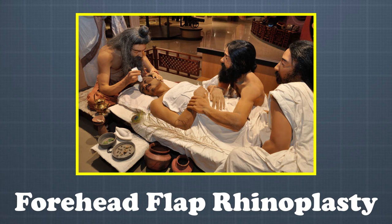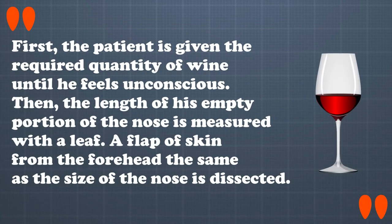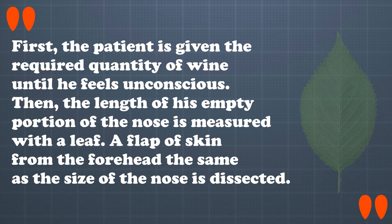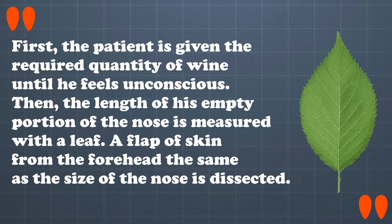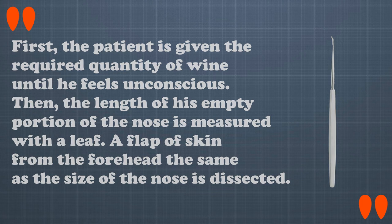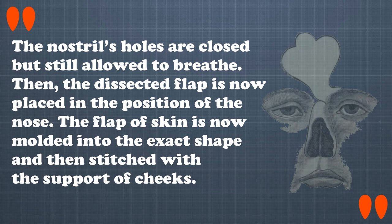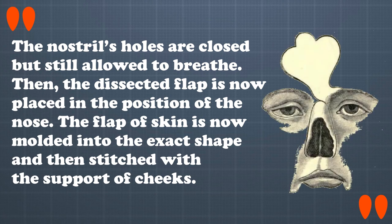When translated, his procedure for a forehead flap rhinoplasty states: First, the patient is given the required quantity of wine until he feels unconscious. Then the length of the empty portion of the nose is measured with a leaf. A flap of skin from the forehead, the same as the size of the nose, is dissected. The nostrils are closed but still allowed to breathe. Then the dissected flap is placed in the position of the nose.